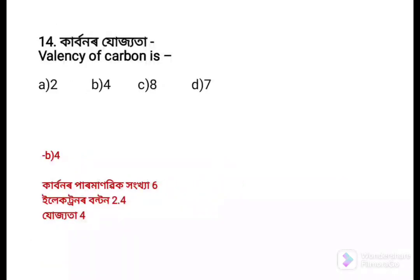The valency of carbon is — Option a: 2, Option b: 4, Option c: 8, Option d: 7. The answer is Option b: 4, because the atomic number of carbon is 6. Its electron configuration is 2, 4 — first shell has 2 electrons, second shell has 4 electrons. So the valency is 4.